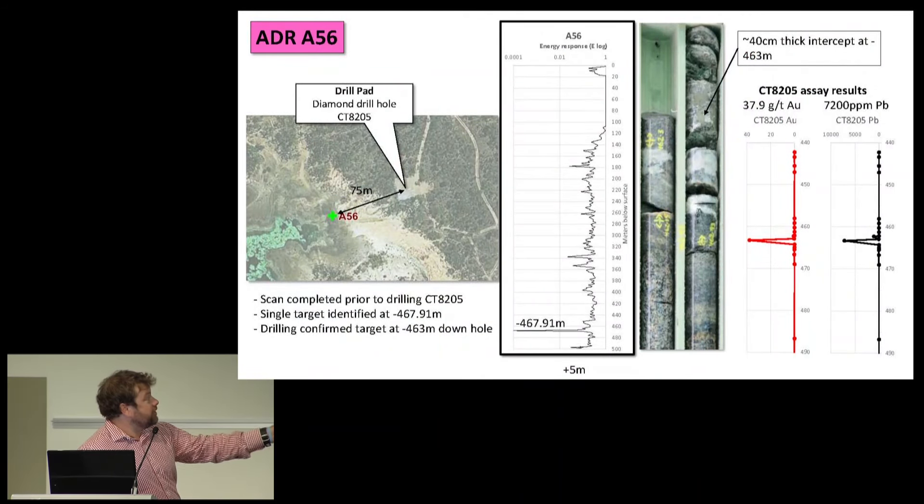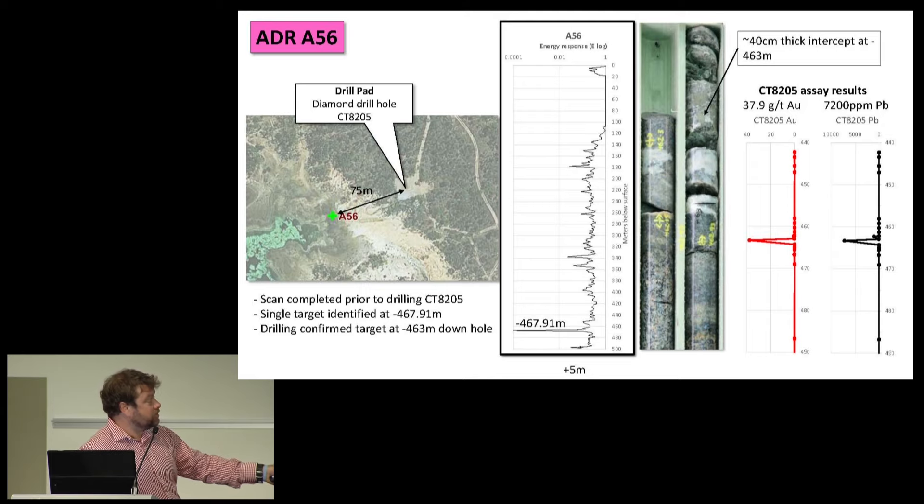This is zoomed in on that area. This is the diamond drill pad and this is the ADR scan. It's about 75 meters between those two. This is the scan result. Again, this is the energy, the e-log plot. You can see there's one major anomaly. This is just the lowest of all the anomalies and this was at minus 467 meters. This was ideal because at the time we got these results back, we hadn't actually started this drill hole. We thought, oh yeah, okay, well, we should see the intercept in the drill hole at that depth.